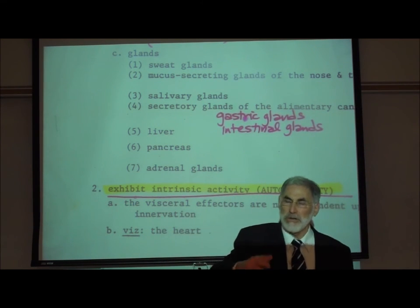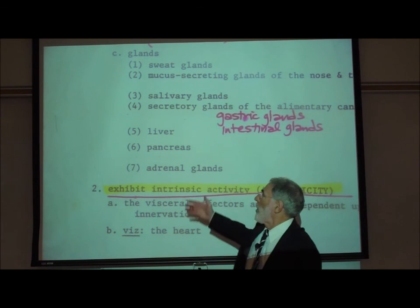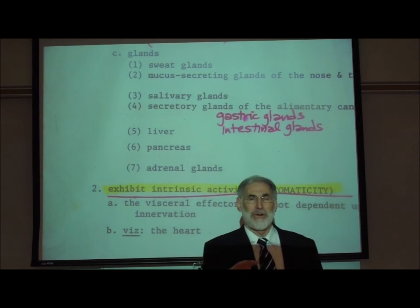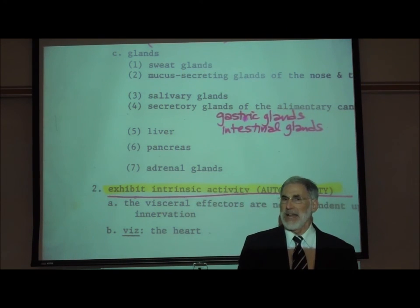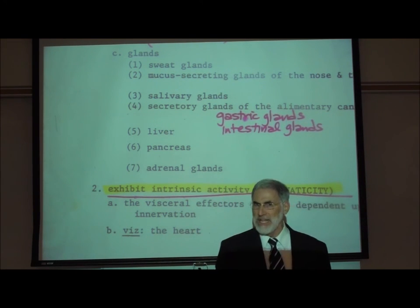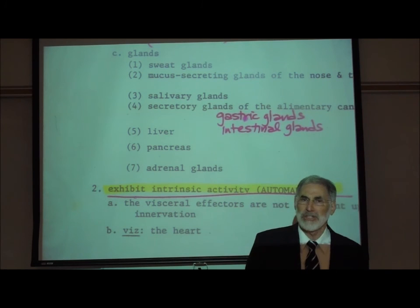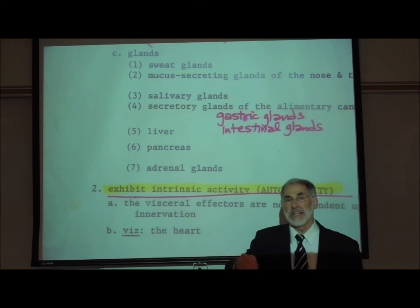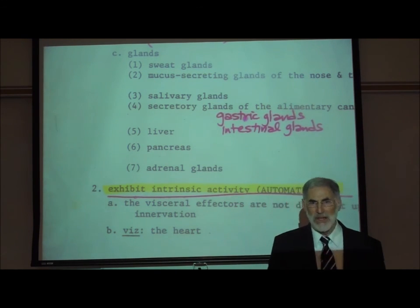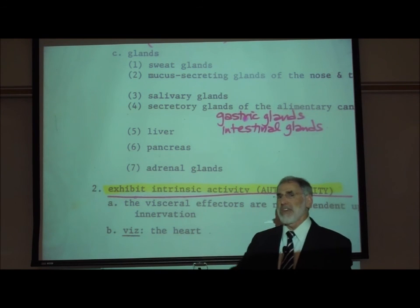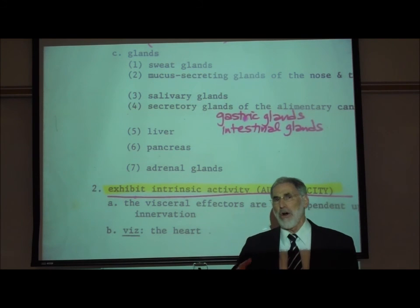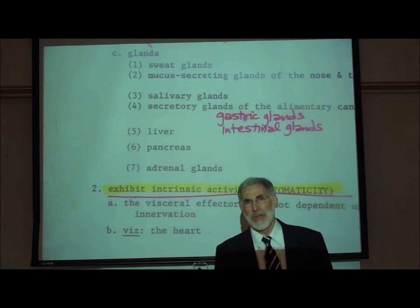Also innervated by the autonomic motor neurons is the liver, which secretes many things including bile. Autonomic motor neurons also innervate the pancreas — a unique organ that is both an endocrine gland and an exocrine gland. Most of the pancreas is an exocrine gland that produces and secretes pancreatic juice, rich in digestive enzymes. Autonomic motor neurons are also associated with the adrenal gland. These are just some examples of the many visceral effectors innervated and affected by the autonomic motor neurons.